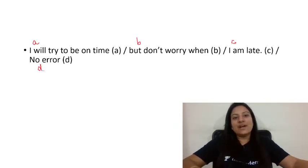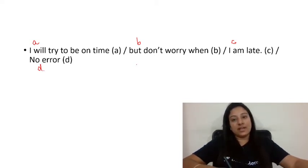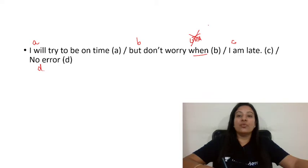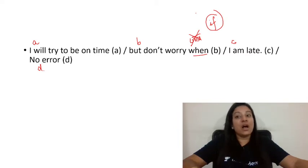Question 6: 'I will try to be on time, but don't worry, when I am late.' Here, 'when' should be replaced with 'if'. 'When' means 'jab' — certainty — but here we need 'if' because it is a conditional situation. So the correct sentence is: 'I will try to be on time, but don't worry, if I am late.'